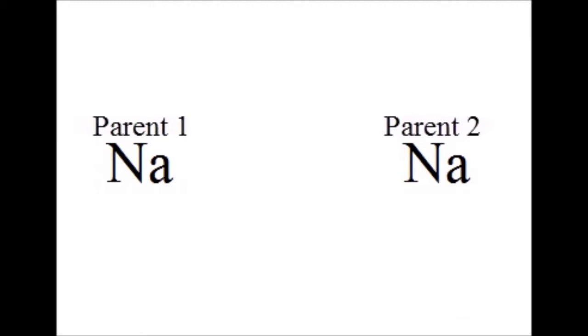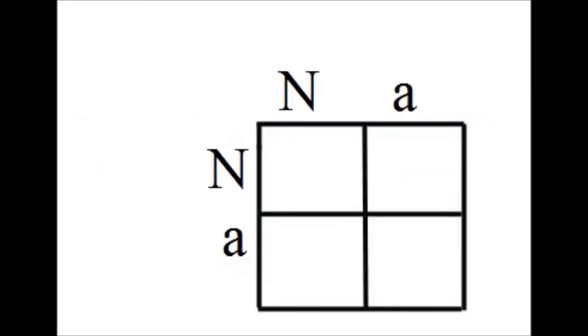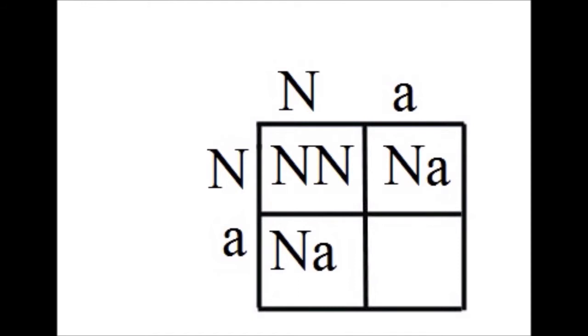So now the next step is to actually produce an albino animal. What if we breed two hets together — two albino heterozygous animals? Here are our two genotypes, 'Na' and 'Na', both het albinos. Laying them across the Punnett square: the first square comes out as 'NN', which is normal; we have two 'Na' squares, which are het albino; and finally we produce an 'aa', a fully albino animal.